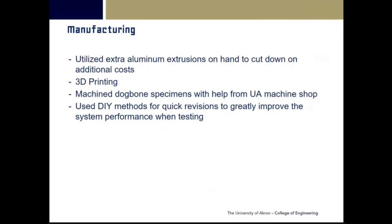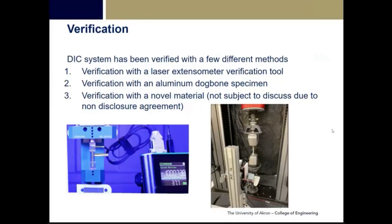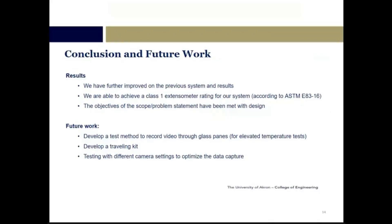We utilized multiple different manufacturing techniques: 80/20 aluminum extrusions, which cut down on additional costs; 3D printing; a machine shop for manufacturing dog bone specimens; and DIY methods for quick revisions to greatly improve performance. The system was verified using three different methods: a laser extensometer, aluminum dog bone test specimens, and a novel material.